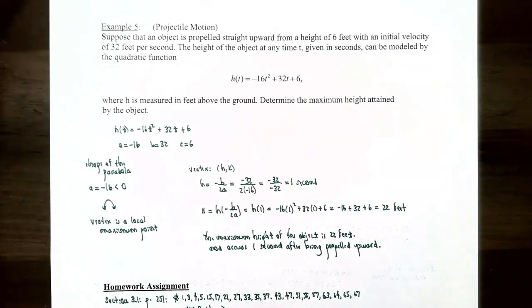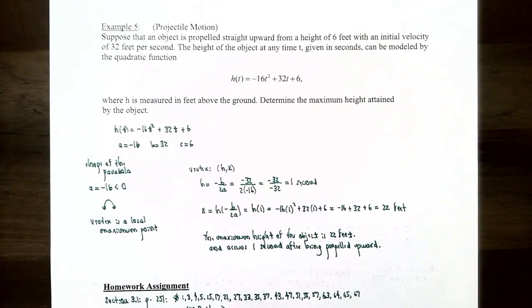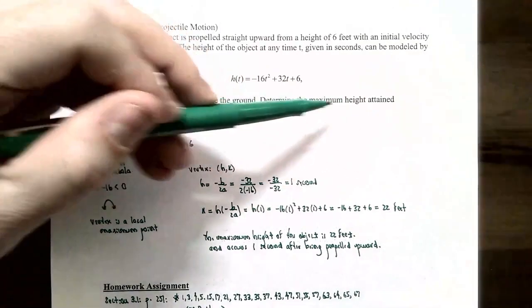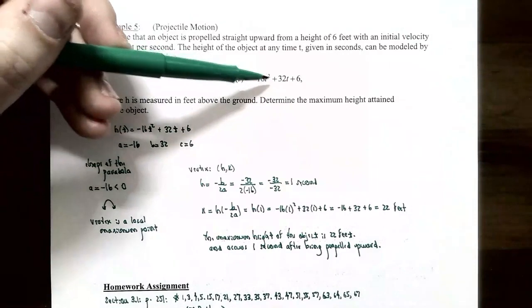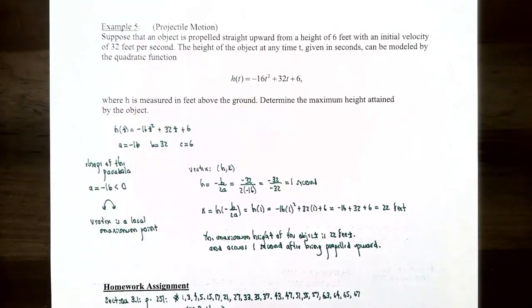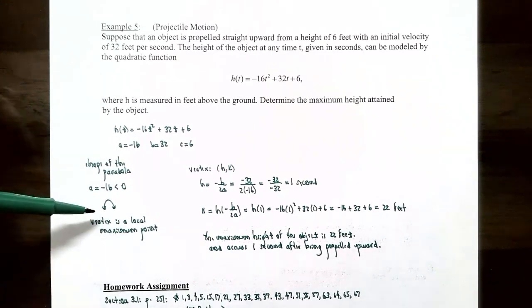Example 5: projectile motion. An object is propelled straight upward from a height of 6 feet with an initial velocity of 32 feet per second. The height at any time t in seconds is modeled by h(t) = -16t² + 32t + 6, where h is measured in feet above the ground. Determine the maximum height. Since a = -16 is negative, the parabola opens down and the vertex is a local maximum point.